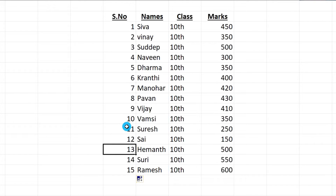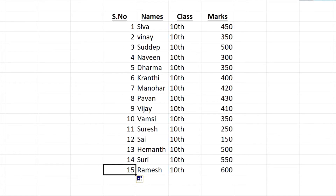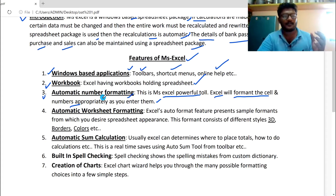This is the third feature of automatic number formatting. If you look at the example: first you enter the Excel, then you copy the first two numbers, drag the other numbers, and Excel uses automatic number formatting. This is the third feature of MS Excel.